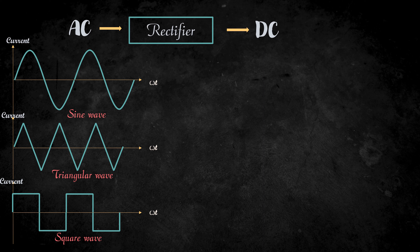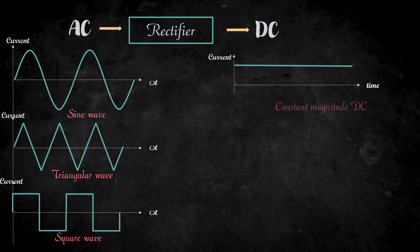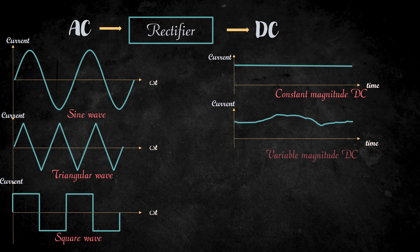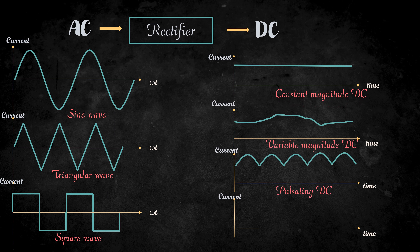In DC, the current will be unidirectional. That means the magnitude of the current will be either in positive or in negative. It can be constant magnitude, or a variable magnitude, or pulsating DC.